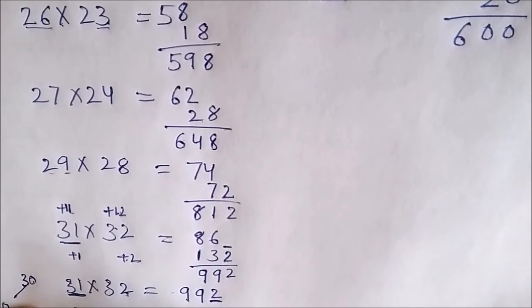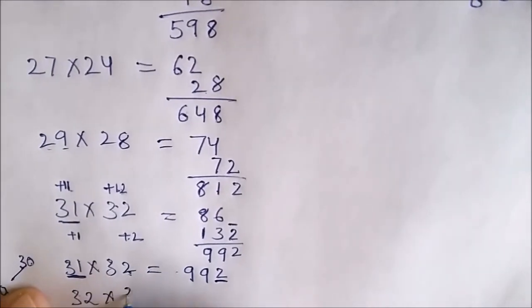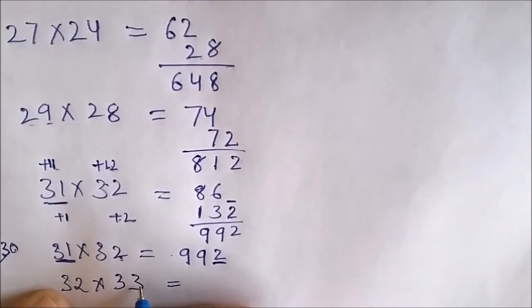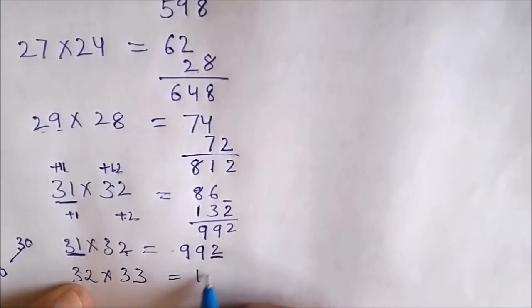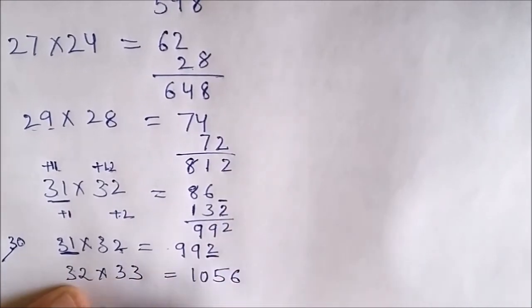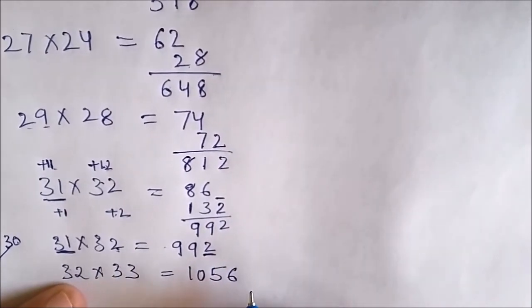Similarly, if you have 32 multiplied by 33, my answer will be 32 plus 3 is 35 and 3 times 35 is 105. If I multiply 2 by 3, I got 6. Answer to this question is 1056.